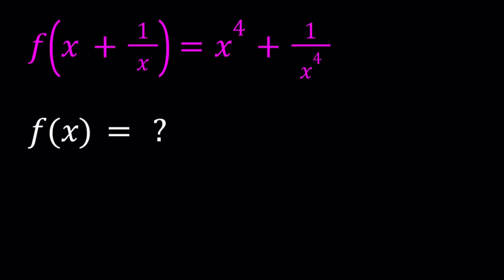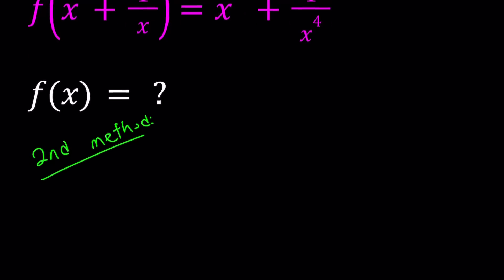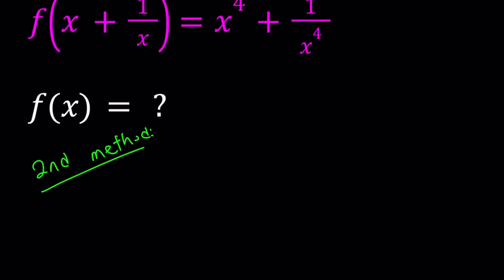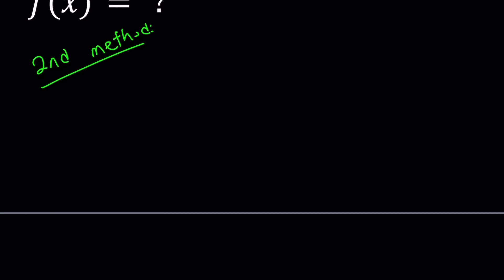I'll be presenting two methods and let's start with the second one. For my second method, I'm going to do the following. Since I'm looking for f of something like a single variable, I want to set this equal to another variable. So let's go ahead and set x plus 1 over x equal to z.